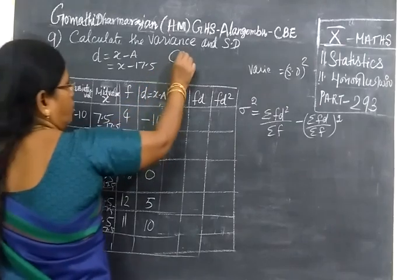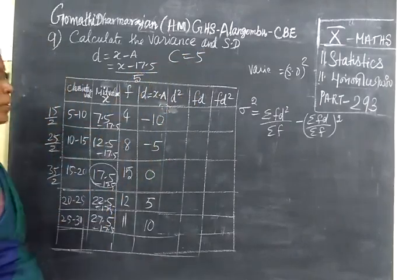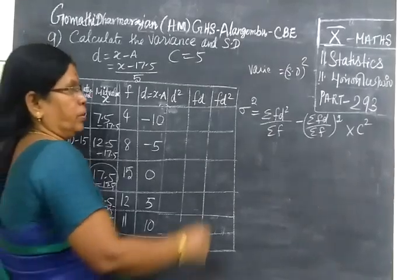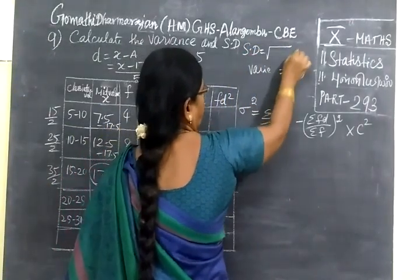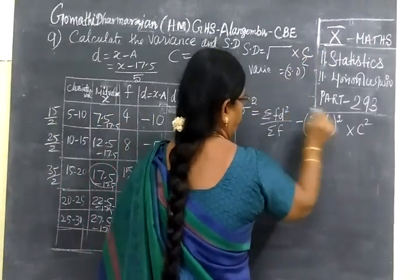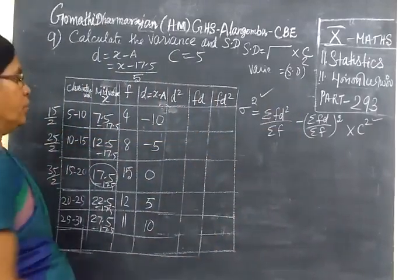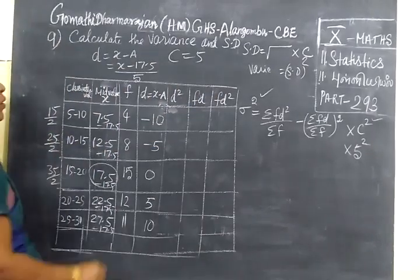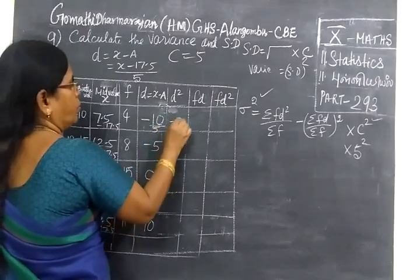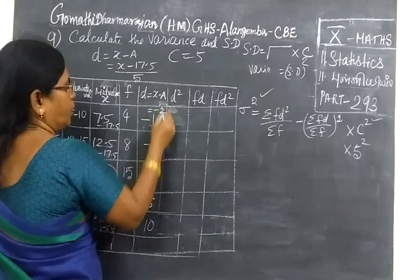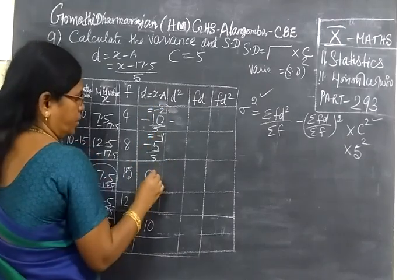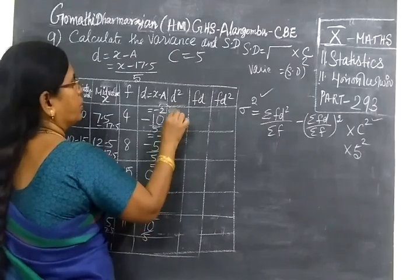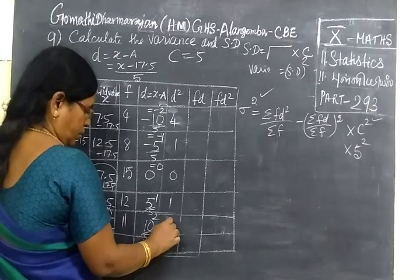The C value is 5. If C is 5, you can take C outside and square it. C equals 5, so C squared equals 25. Now dividing by 5: minus 10 divided by 5 is minus 2, minus 5 divided by 5 is minus 1, then 0, then 1, then 2. So d squared values are 4, 1, 0, 1, 4.